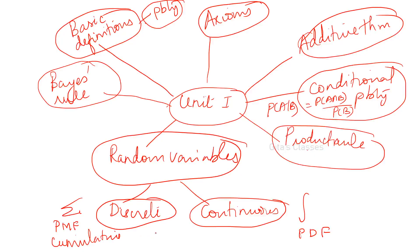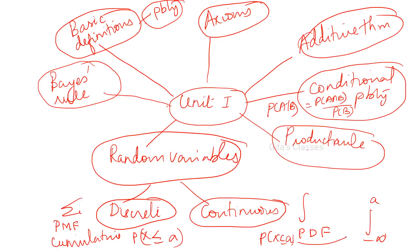For discrete it is PMF, for continuous it is PDF. Then the cumulative distribution function (CDF): cumulative means you add up to that point — P(X ≤ x). For continuous, P(X ≤ a) means the integral from minus infinity to a of the PDF. That is the cumulative function.